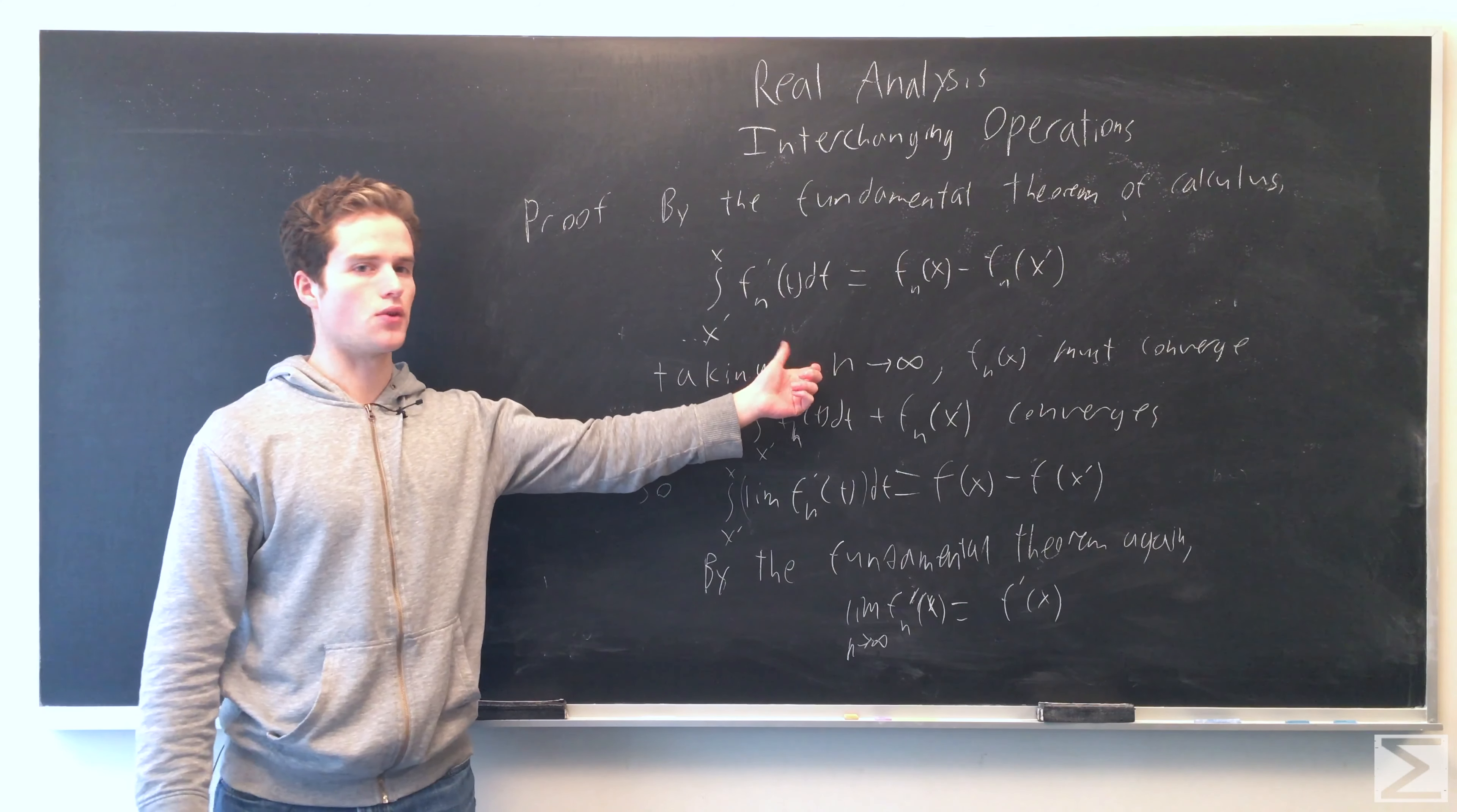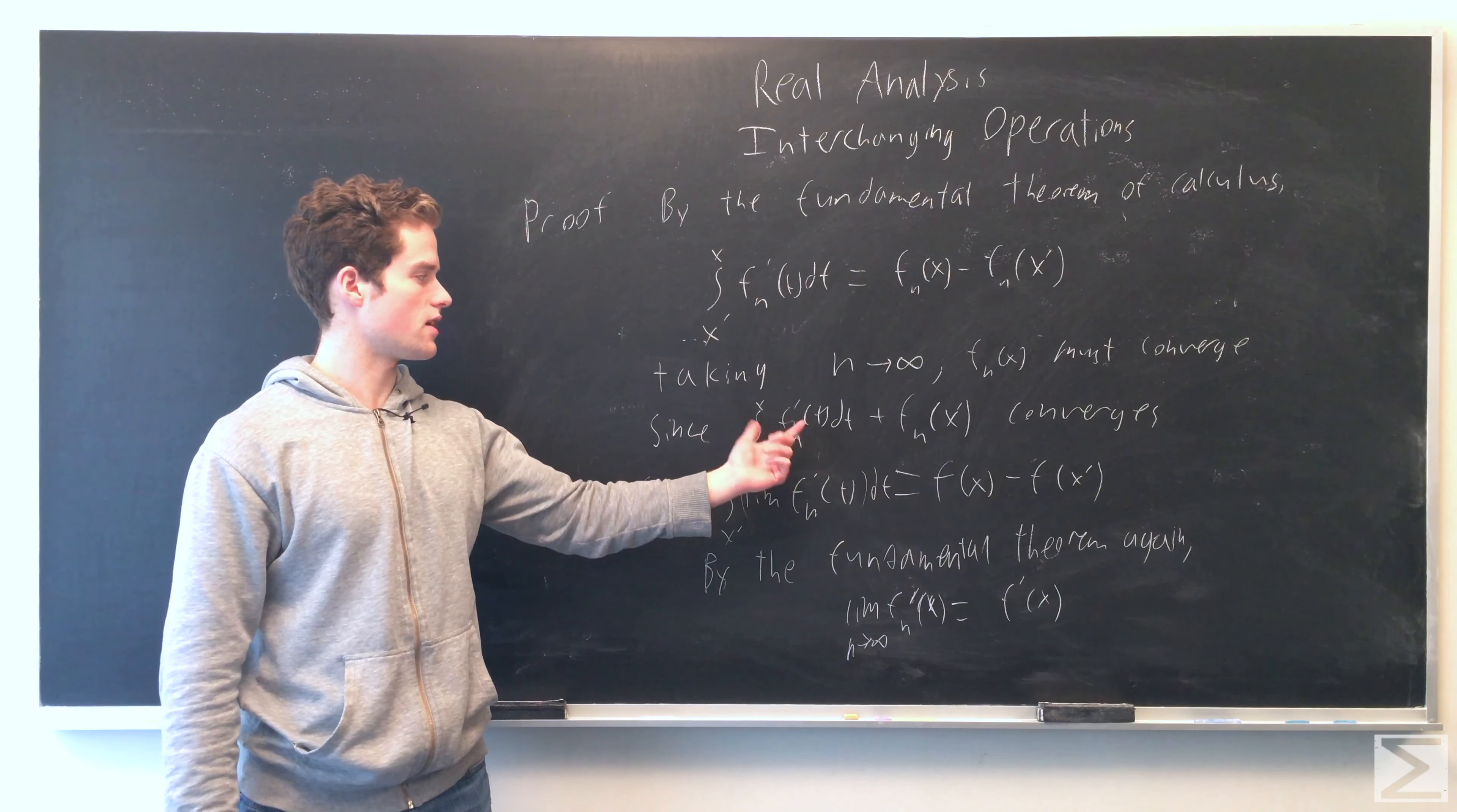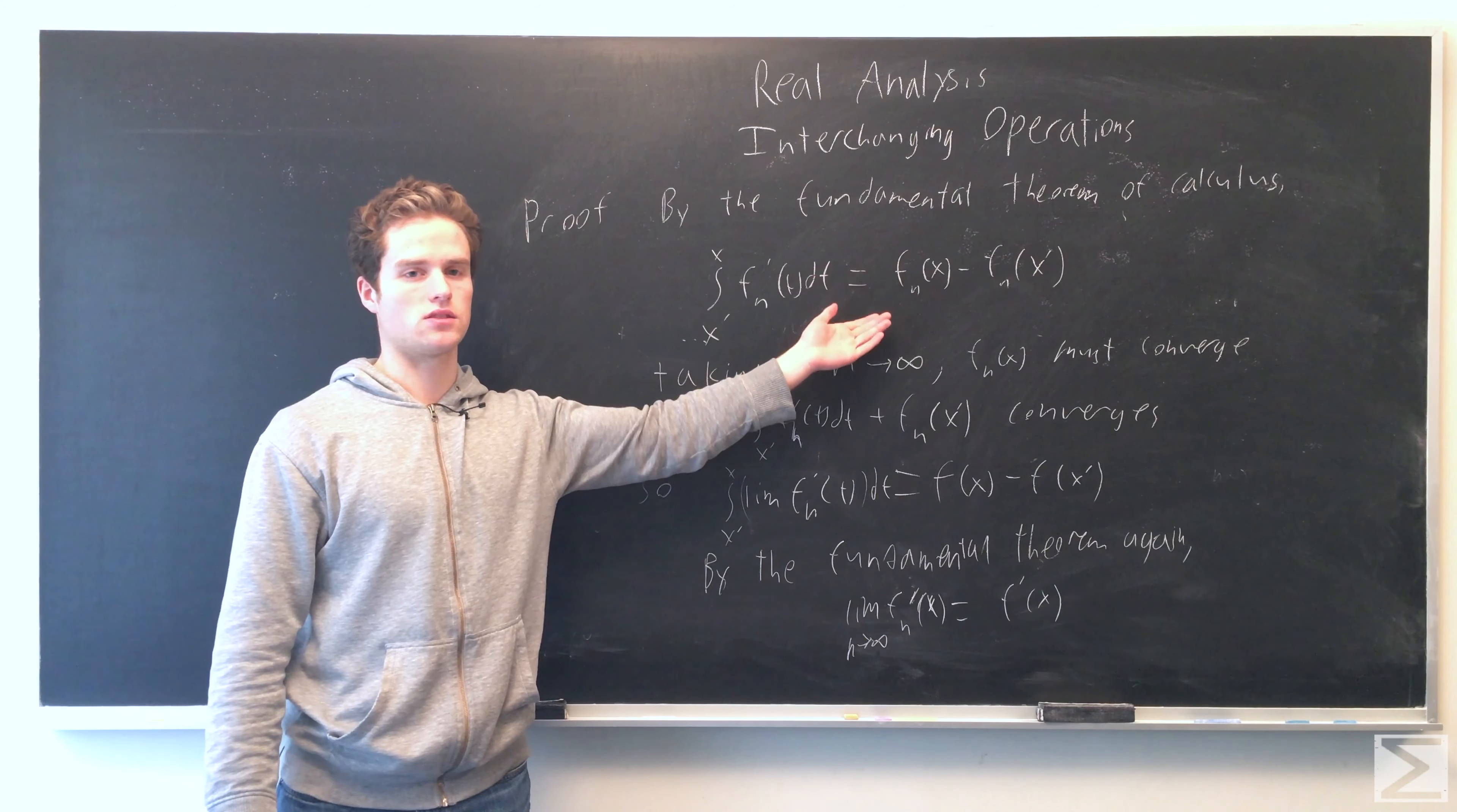So taking the limit as n goes to infinity and knowing from our previous theorem, since the f_n' converge uniformly in our open interval, we can switch the limits. So since they converge inside, this thing converges, this thing converges, so f_n(x) must also converge. So now we've established that f_n(x) in fact has some limit.